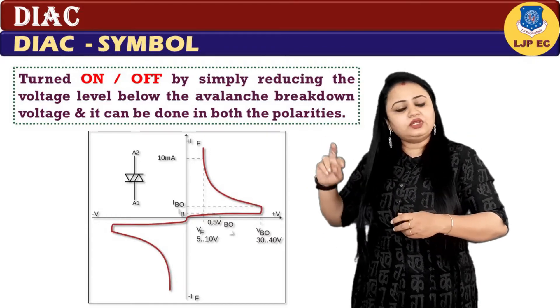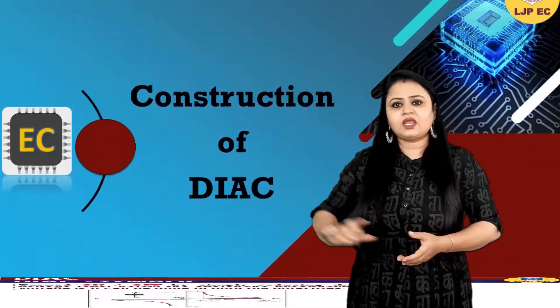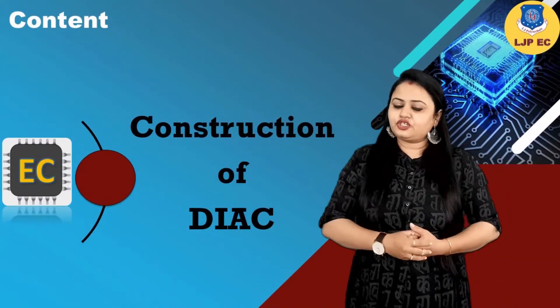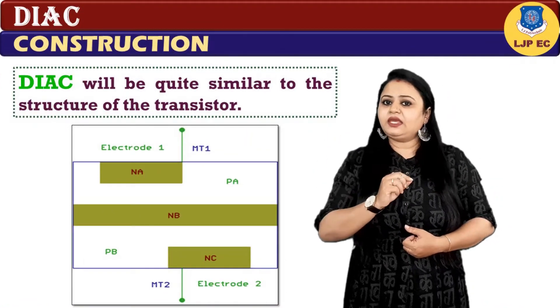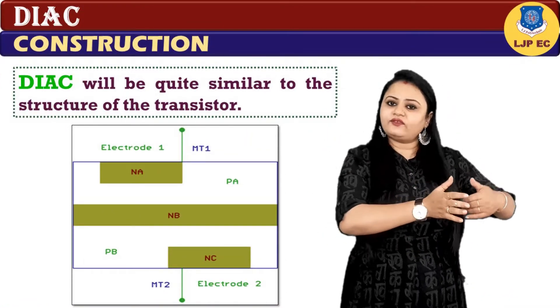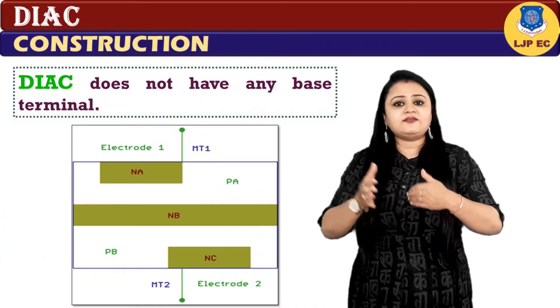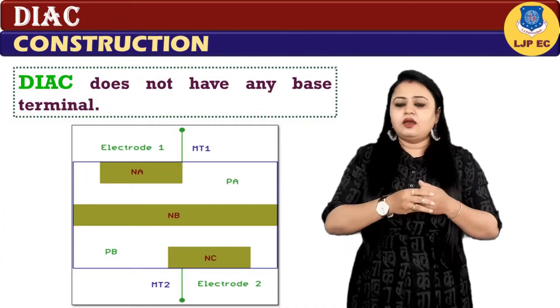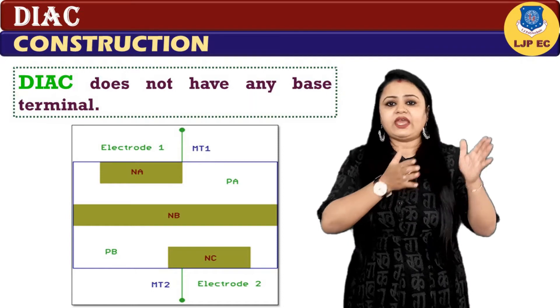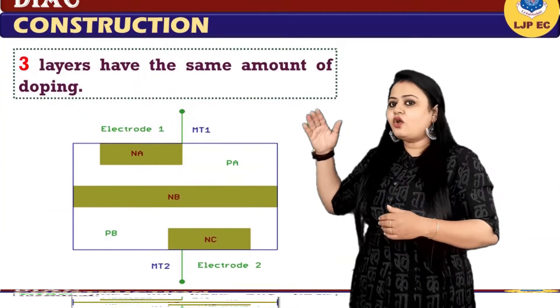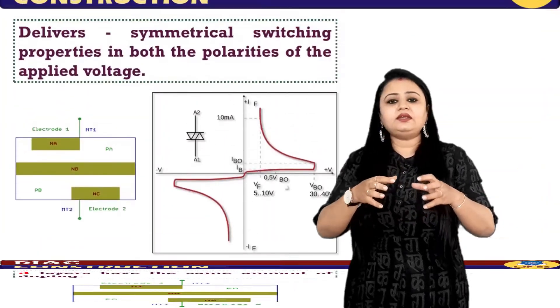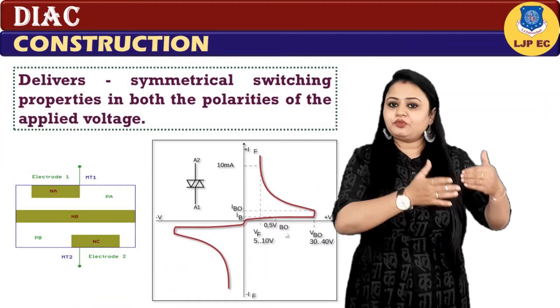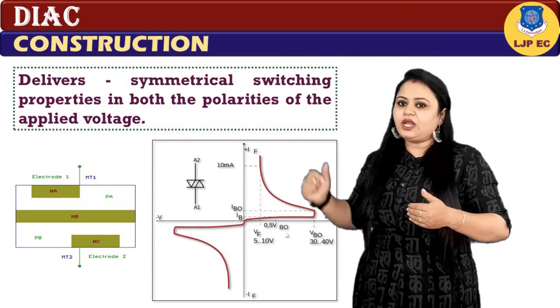Moving on to the construction of DIAC, the construction will be quite similar to the structure of a transistor, but they have some differences. Like, DIAC does not have any base terminal. All three layers have the same amount of doping, and it delivers symmetrical switching properties in both polarities of applied voltage.